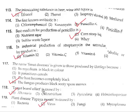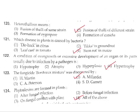Question 119: Plant disease papaya mosaic is caused by a virus. Correct answer is option 2. Question 120: Heterothallism means fusion of thalli of different strains. Correct answer is option 2. Question 121: Which disease in plants is caused by bacteria? Stem rot in maize is a bacterial disease. Correct answer is option 4.